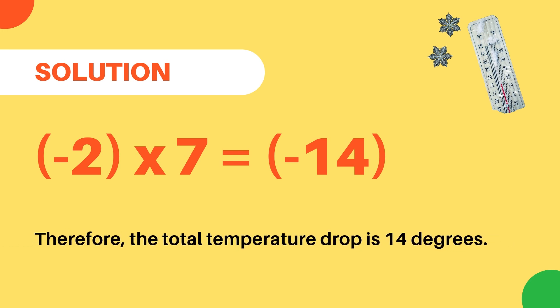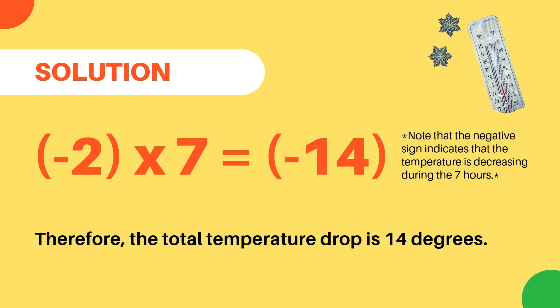So the final solution is negative 2 multiplied by positive 7 equals negative 14. Therefore, the total temperature drop is 14 degrees. Note that the negative sign indicates that the temperature is decreasing during the seven hours.